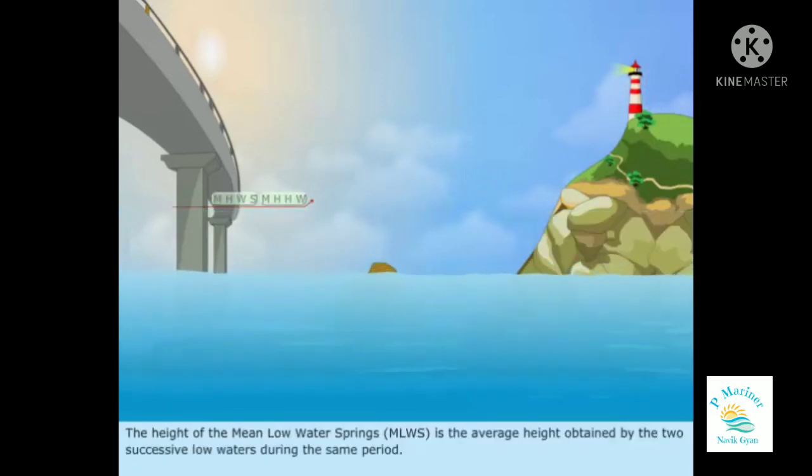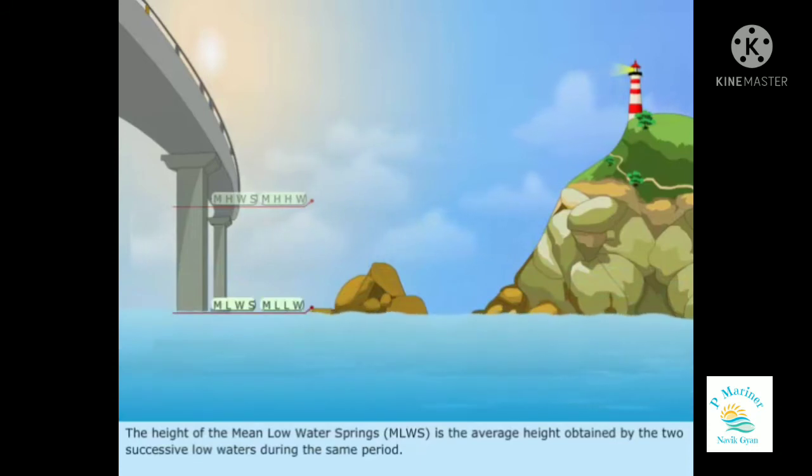The height of the Mean Low Water Springs is the average height obtained by the two successive low waters during the same period.